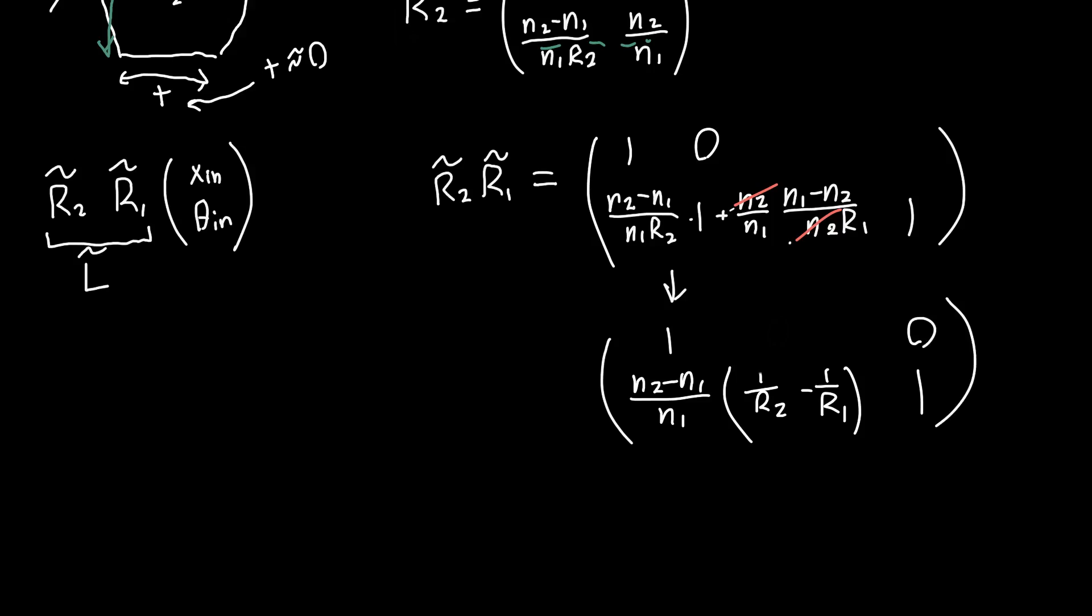This is our final answer. This is the transfer matrix for the thin lens, and it's not approximate—this is actually equal to the transfer matrix for the thin lens. This quantity here you might recognize as the lens maker's equation.